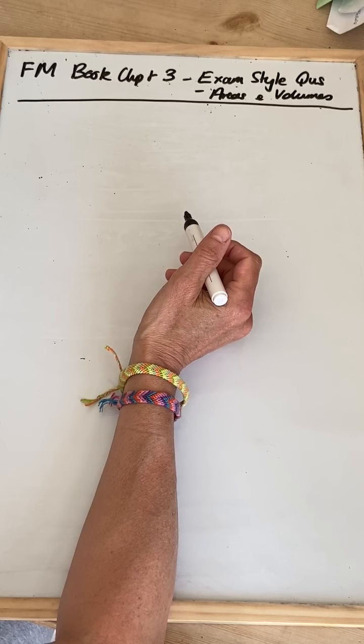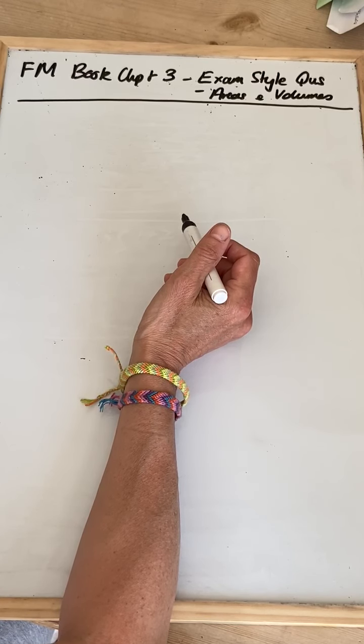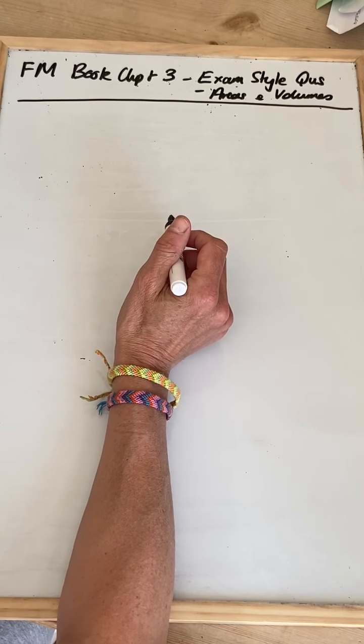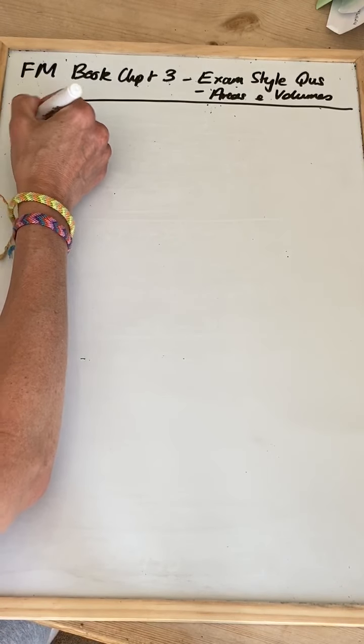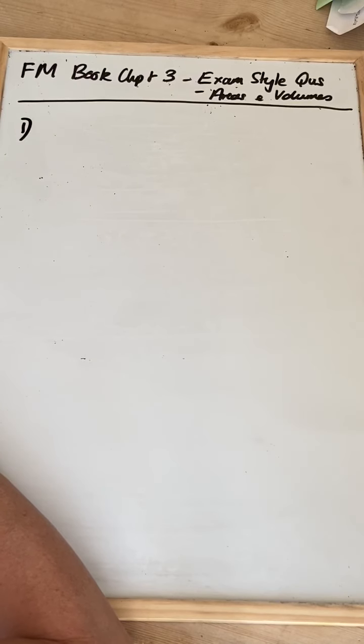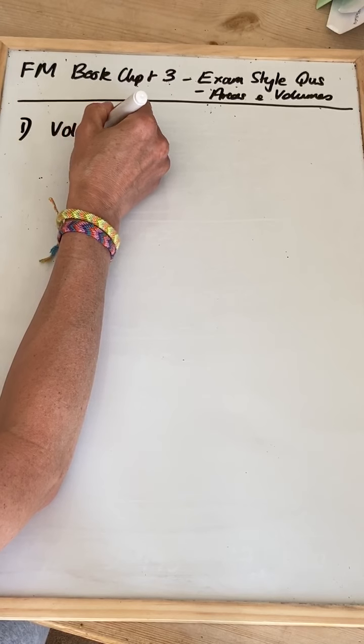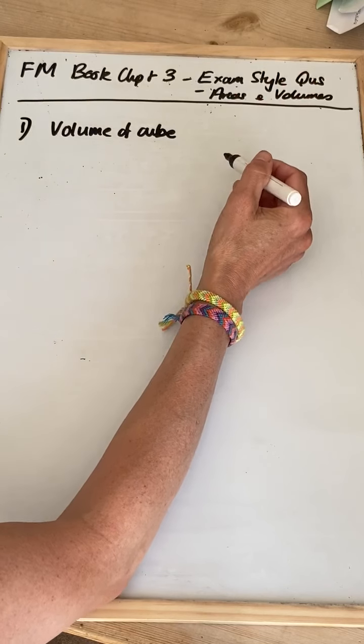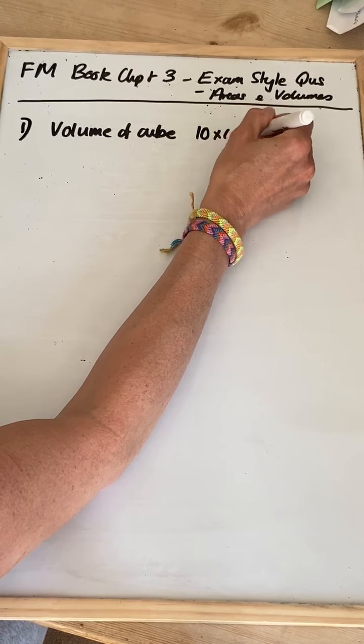We're having a look at question one. A cylindrical hole is drilled through a cube. The volume of wood removed is half of the original volume of the cube. Calculate the diameter of the hole. I think the first thing we need to think about then is what is the original volume of the cube. Our cube is 10 centimeters side length. So the volume of the cube is 10 by 10 by 10, which is 1,000 centimeters cubed.